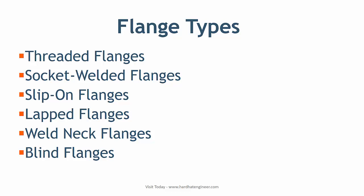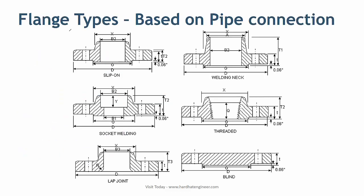Based on the type of connection, flanges are classified as threaded flange, socket welded flange, slip-on flange, lap flange, weld neck flange, and blind flange. In this image, you can see the cross section of each type of flange. You will learn about each of them in the next few slides.